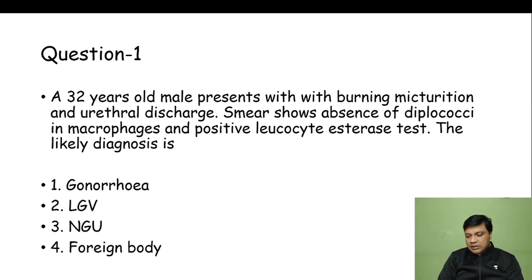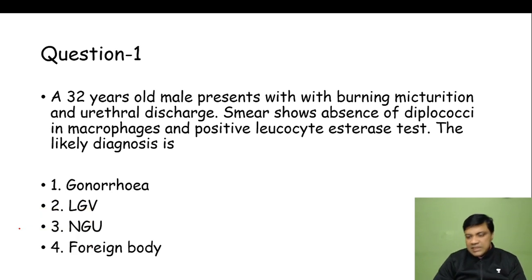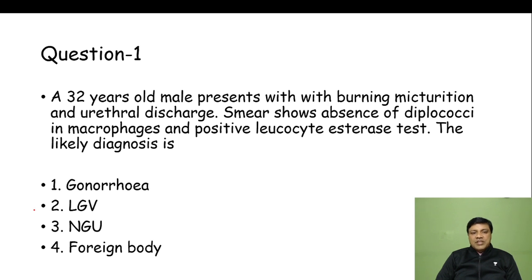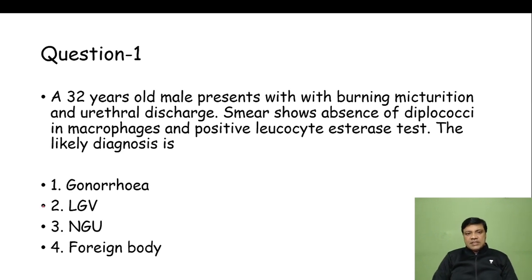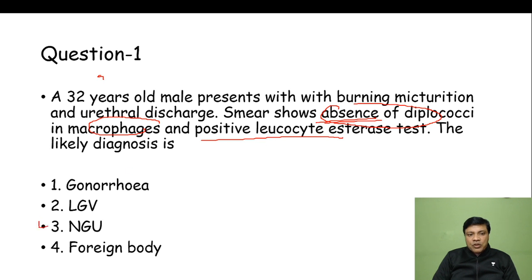The first question: a 32-year-old male presents with burning micturition and urethral discharge. Smear shows absence of diplococci in macrophages and positive leukocyte esterase test. The likely diagnosis is gonorrhea, LGV, non-gonococcal urethritis, or foreign body. The key point is the absence of diplococci in macrophages and positive leukocyte esterase test — so the answer here is non-gonococcal urethritis.